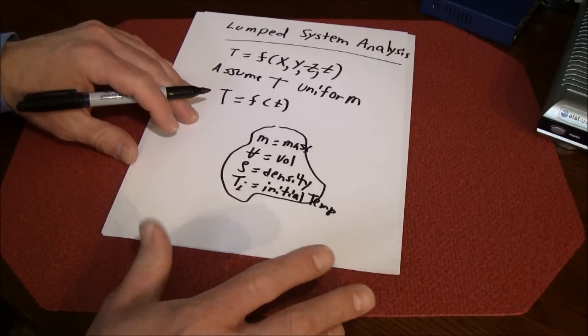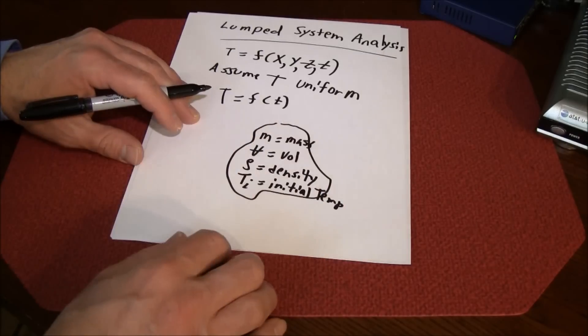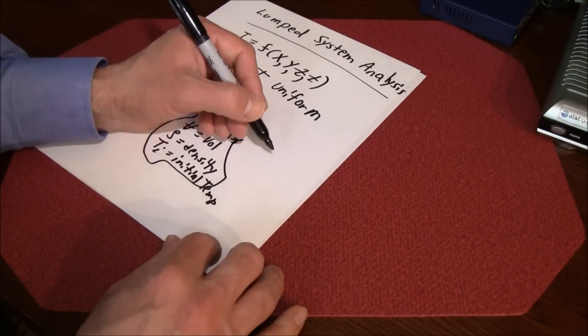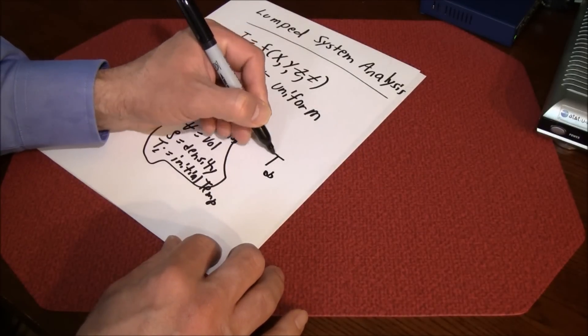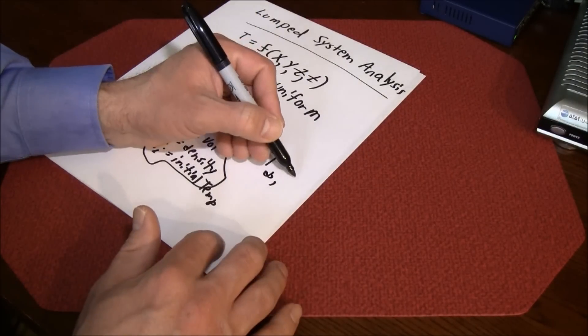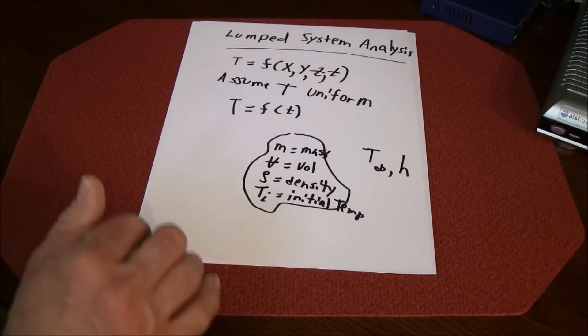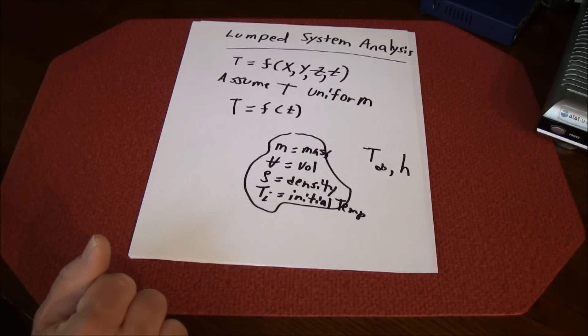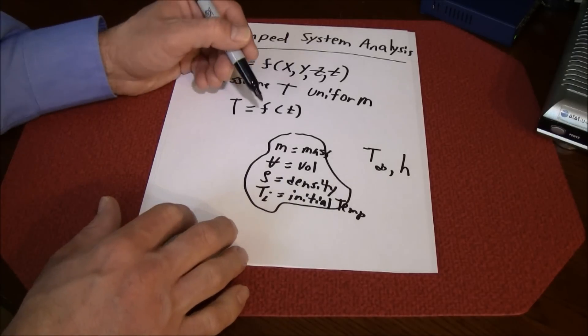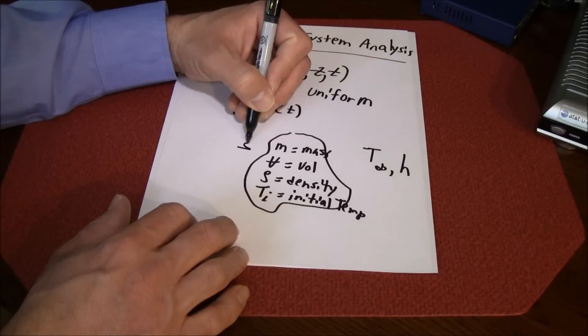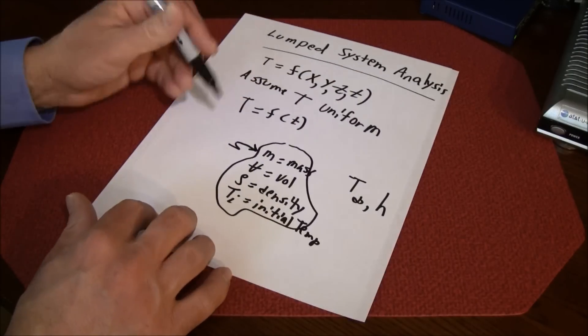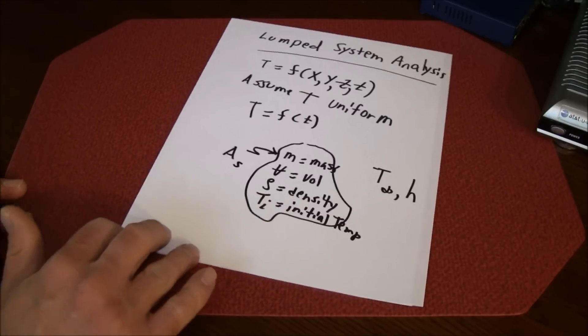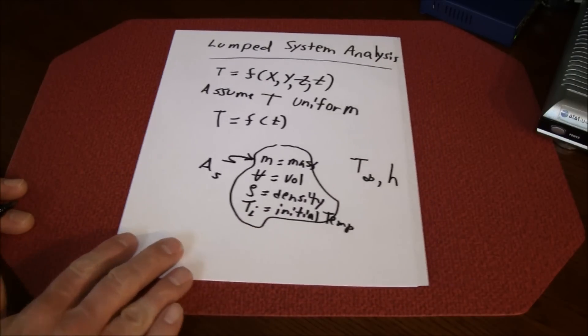If we suddenly expose this object here to an outside temperature T infinity with some convection coefficient h, you would have some heat transfer taking place to or from the object. We'll say that the surface area of our body here is A sub s. So that'll be the geometry we're looking at here.